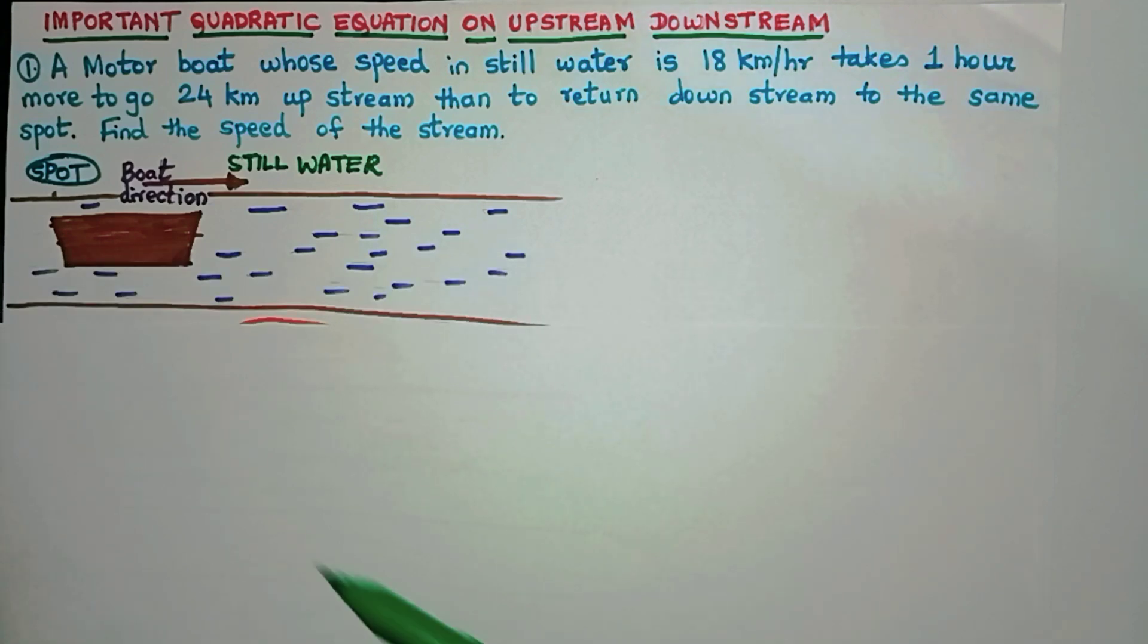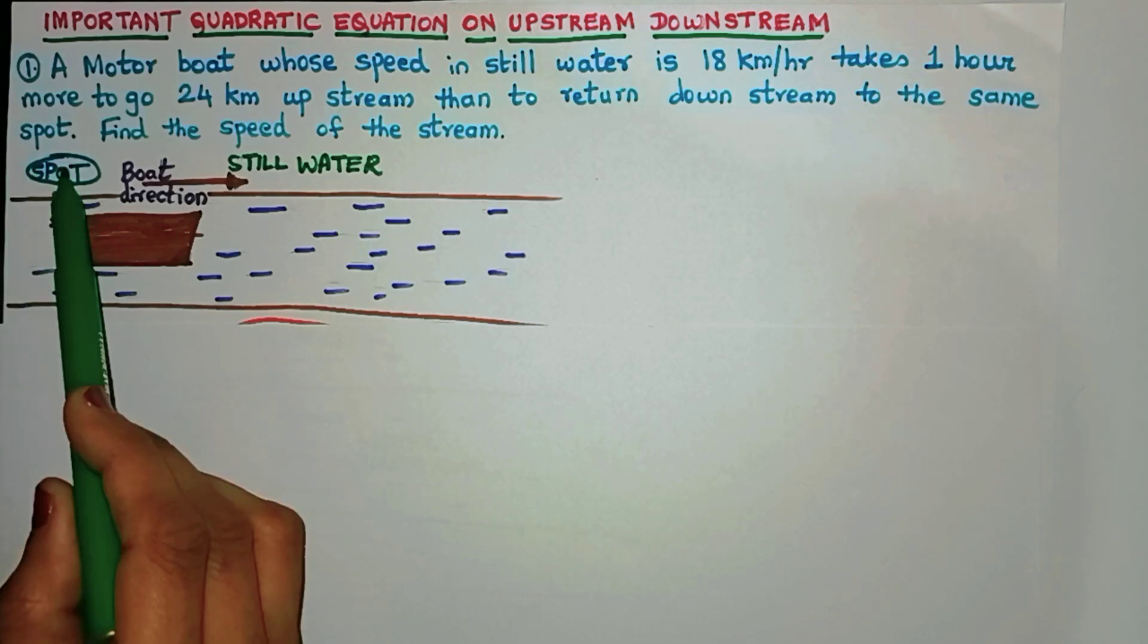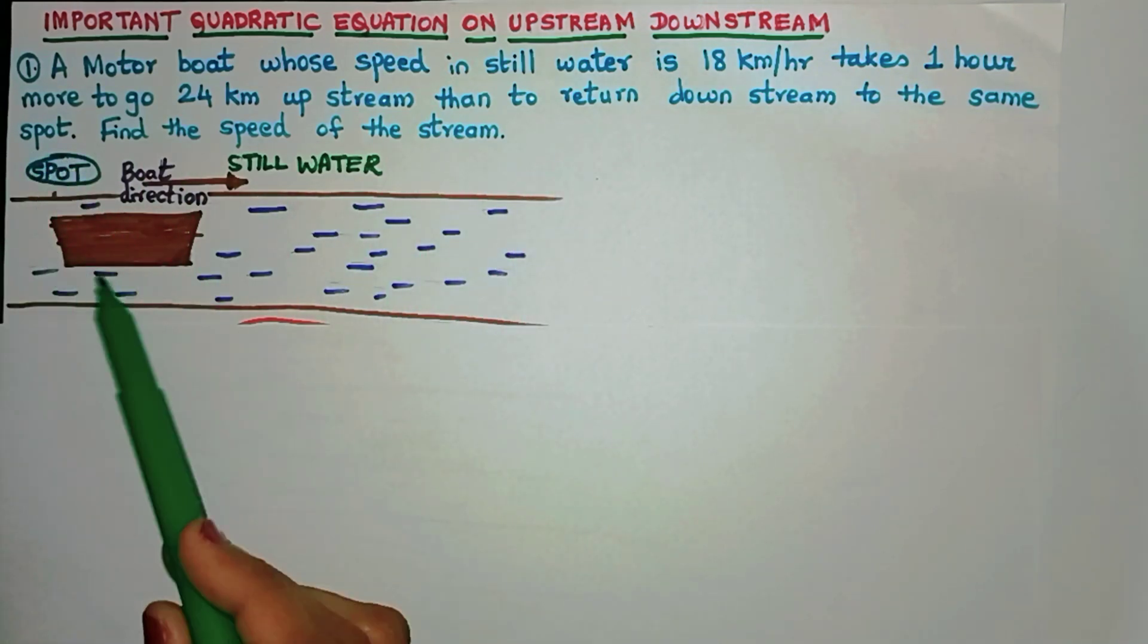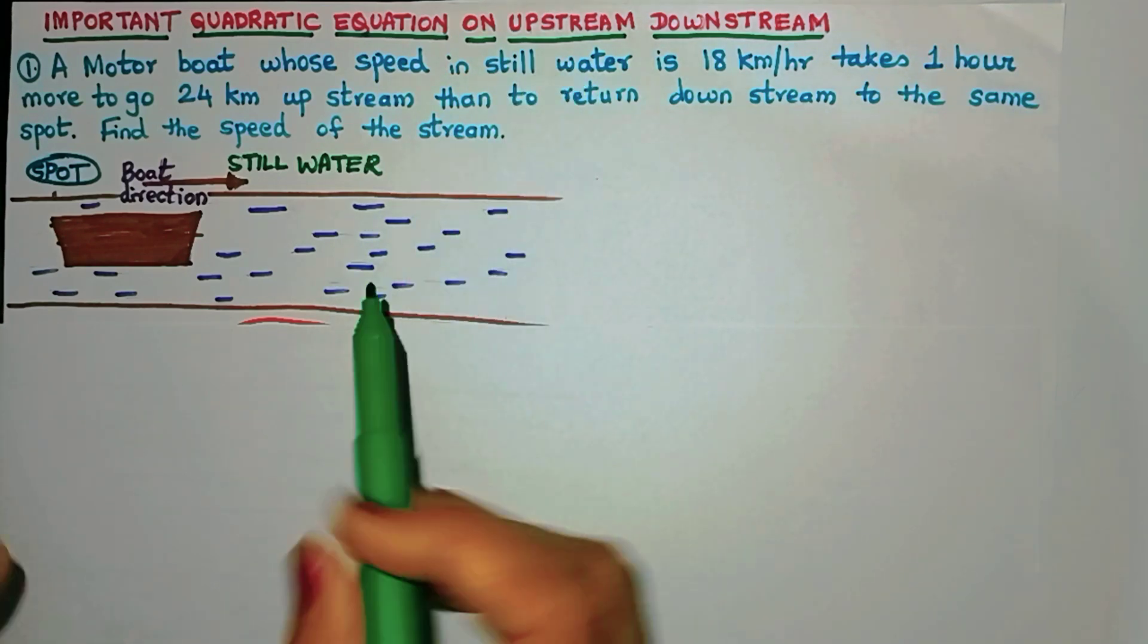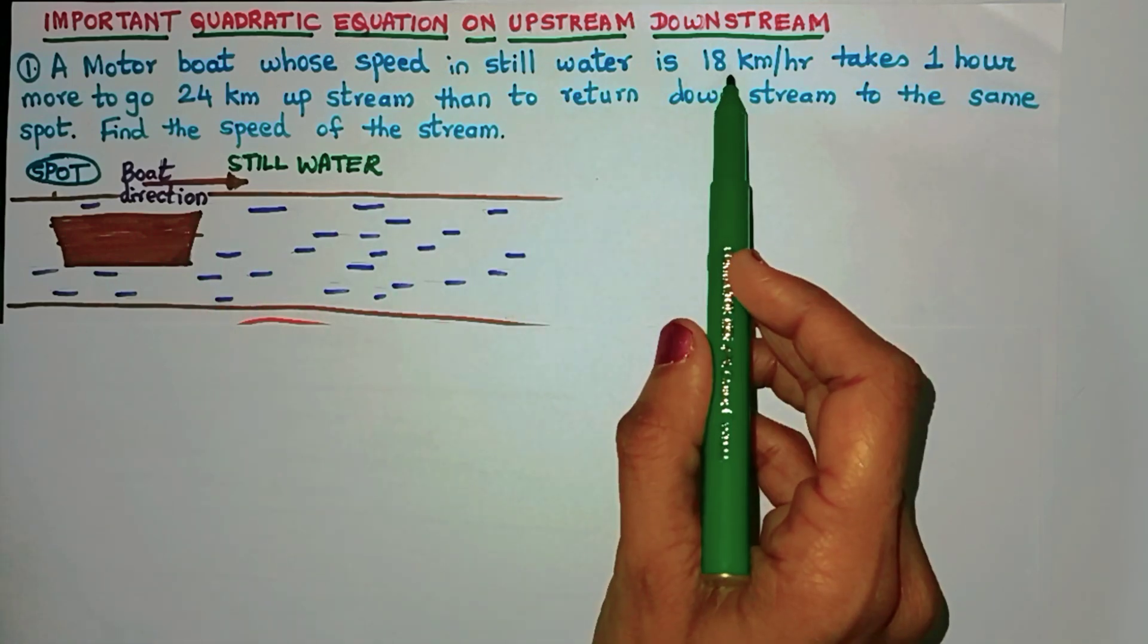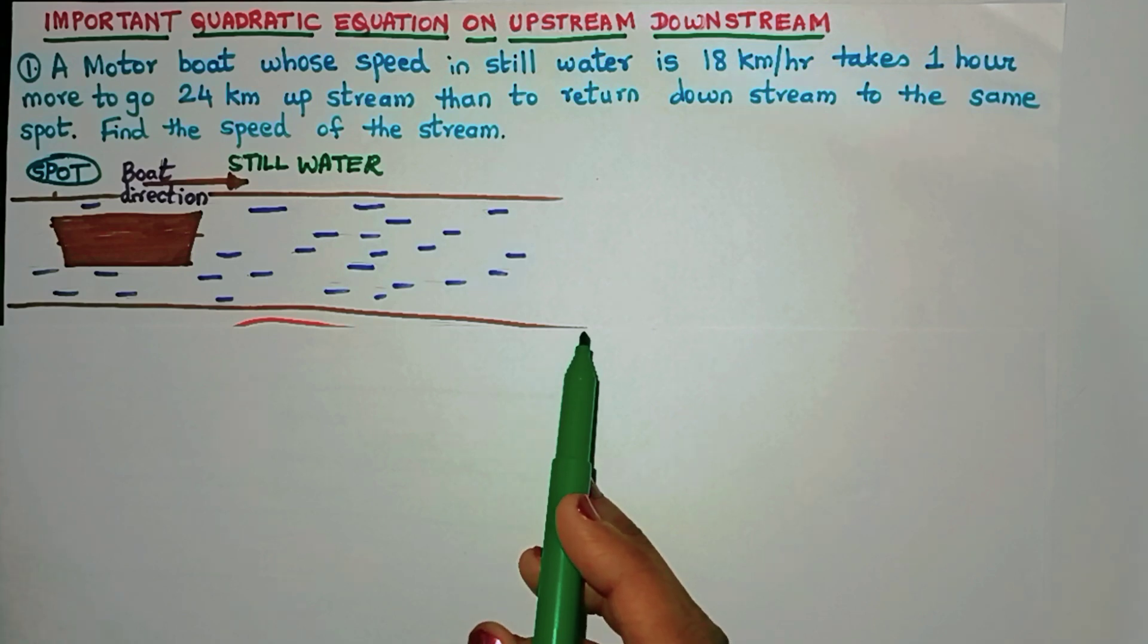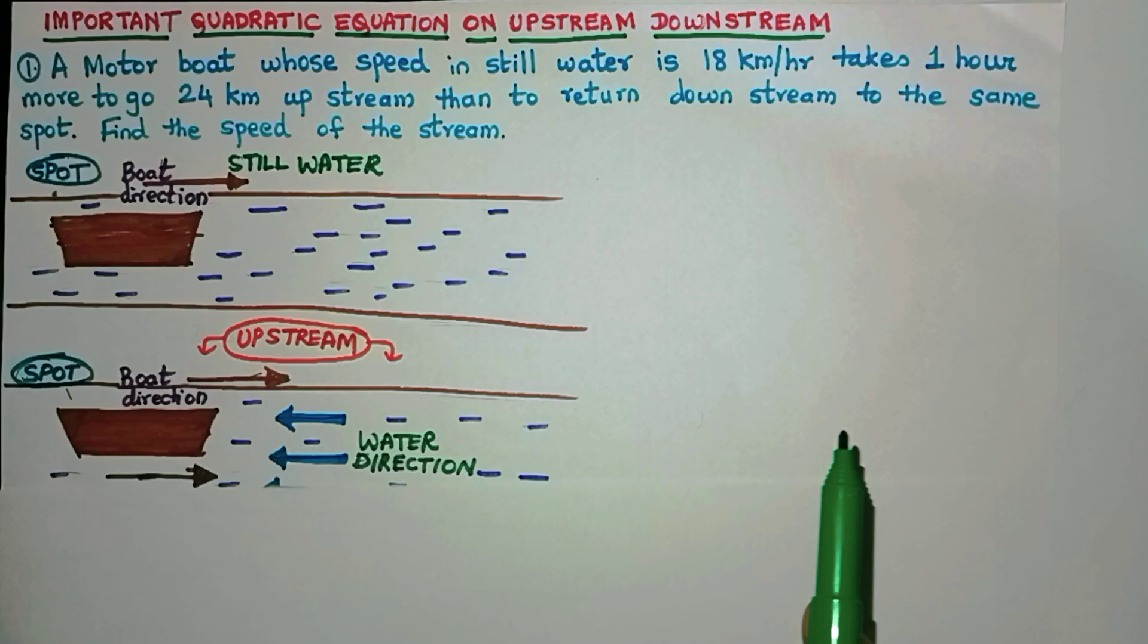Let us suppose that this is the spot, here is the boat and this is the stream. The boat has to travel from here 24 kilometers and come back to the same spot. It is given that in still water, that is when the water is not moving, the speed of the boat is 18 km/hr. If the water was not moving, the situation would have been very straightforward. But the water is flowing in a particular direction.